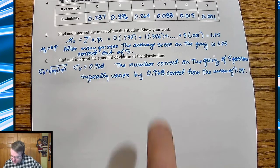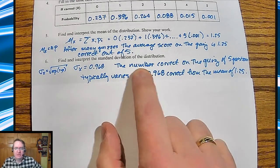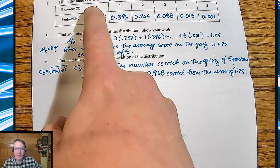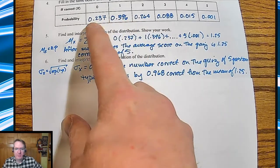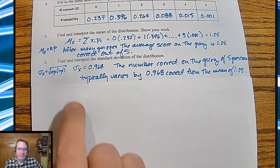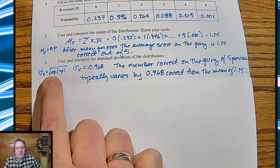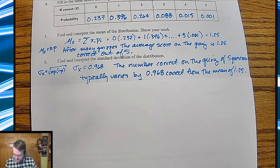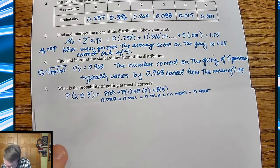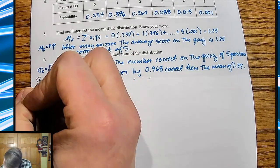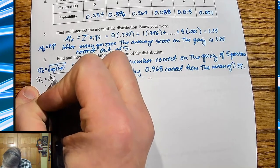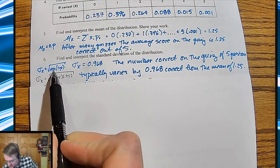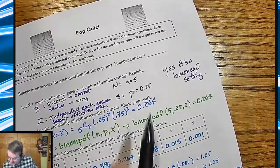In terms of the standard deviation, you can type it all in by hand: find the distance between X and your average of 1.25, square it, multiply by the probability, add them all up, and take the square root. The shortcut is that the standard deviation of X equals the square root of N times P times (1 minus P). In this case, that's the square root of 5 times 0.25 times 0.75. So P and (1 minus P) are the two probabilities we use in the binomial formula.